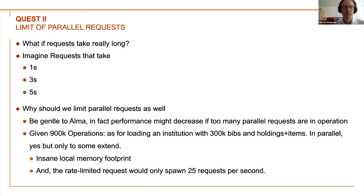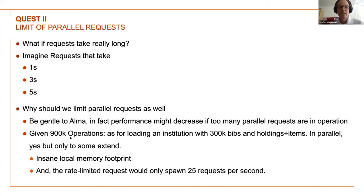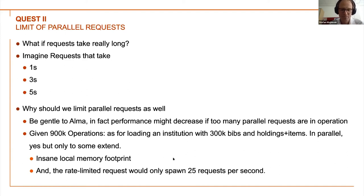We want some limit for parallel requests as well, not just the per-second temporal limit. Our motto is 'be gentle to ALMA' — performance might decrease especially in write operations when you do too many parallel requests. For example, given 900,000 operations like loading an institution with 300,000 bibs, holdings, and items in parallel — yes, but only to some extent. If you really emitted all those requests in a loop with no notifications, it would create an insane local memory footprint.